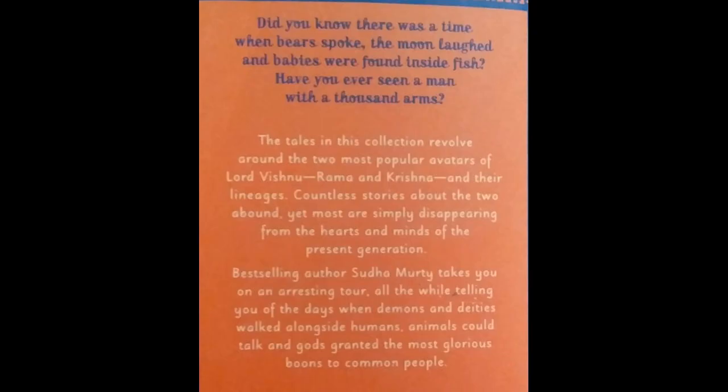Now let me read the blurb of the book. 'Did you know that there was a time when pierced hope, the moon laughed, and babies were found inside fish? Have you ever seen a man with a thousand arms? The tales in this collection revolve around the two most popular avatars of Vishnu — Rama and Krishna — and their lineage. Countless stories about the two abound, yet most are simply disappearing from the hearts and minds of the present generation. Bestselling author Sudha Murthy takes you on an arresting tour, all the while telling you of the days when demons and titans walked alongside humans, animals could talk, and gods granted the most glorious boons.'